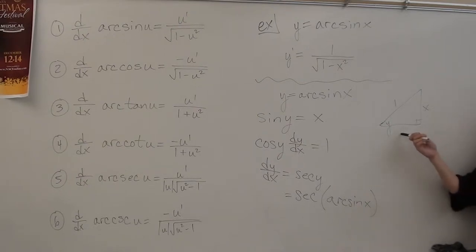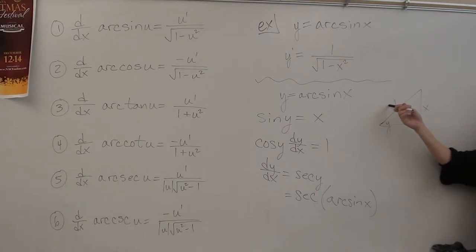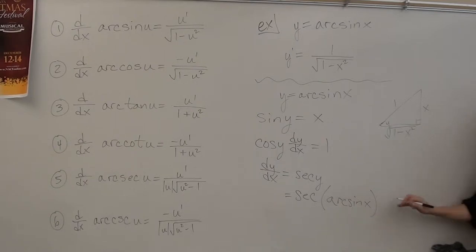I need this side. So, Pythagorean theorem says this squared plus this squared equals this squared. So, this squared equals this squared minus this squared. This side is the square root of 1 squared minus x squared. We need the secant of this angle. Well, secant is hypotenuse over adjacent. So, the secant of this angle is 1 over the square root of 1 minus x squared. And you have now just derived the derivative of arc sine x. That's a lot. Okay?